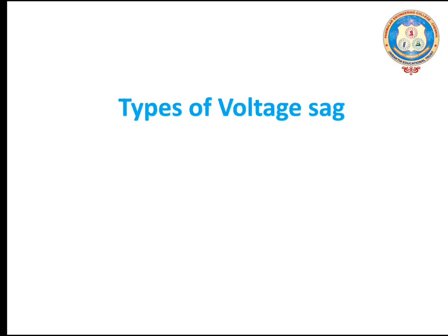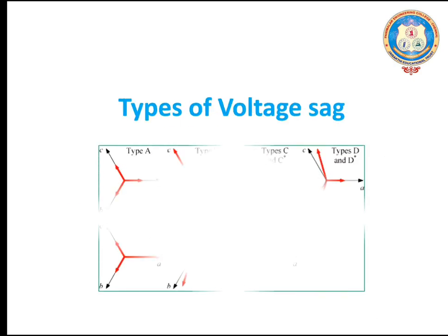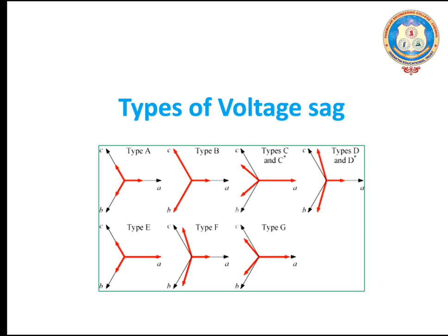What are the types of voltage sag? The voltage sag is classified as type A, type B, type C, type D, type E, type F, and type G.